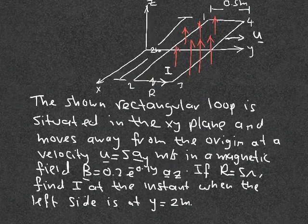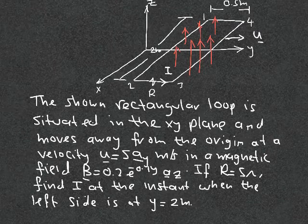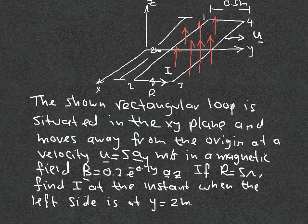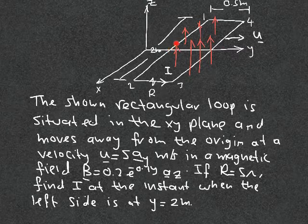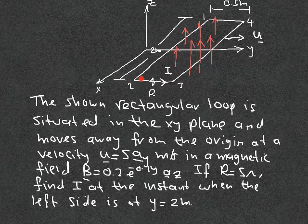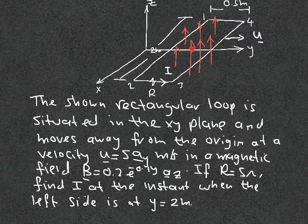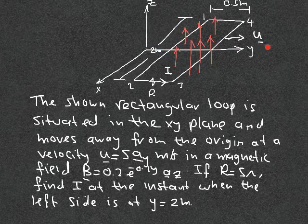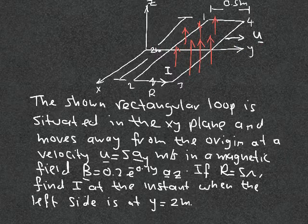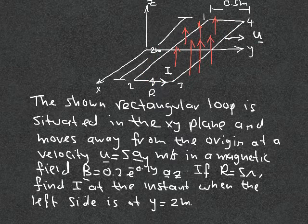We want the current at the instant when y equals 2 meters. The whole loop is moving in the y direction, so y is increasing with time — this edge starts at zero, then one, then two. We want to calculate the current i going through this loop at the time y equals 2 meters.